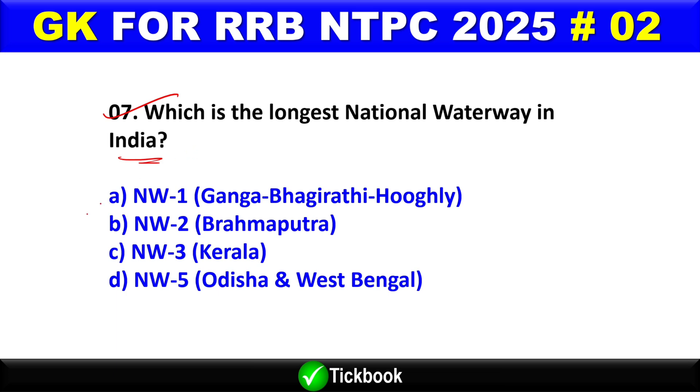Option A is the right answer — National Waterway 1, the Ganga-Bhagirathi-Hooghly river system.